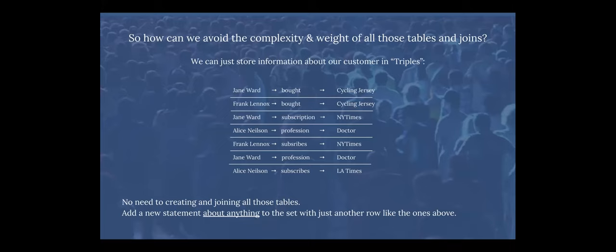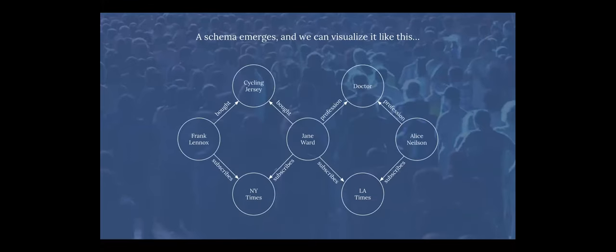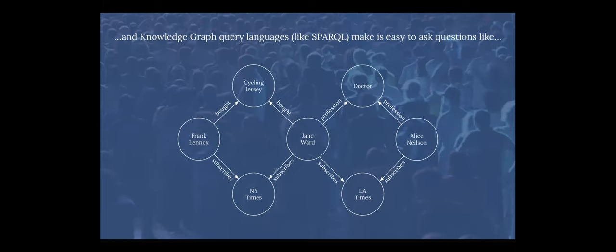We can really create these triples about anything we want to connect, and that's really the power of it — that's the heart of how graphs work. When you start to build that list of triples, what emerges from it is a schema, and we can visualize it. The graph type of data model has query languages; the one we use at Data.World is the W3C standard SPARQL language. It lets us ask questions about connections in this graph, such as which customers have a matching purchase and subscription, or a matching profession and subscription.